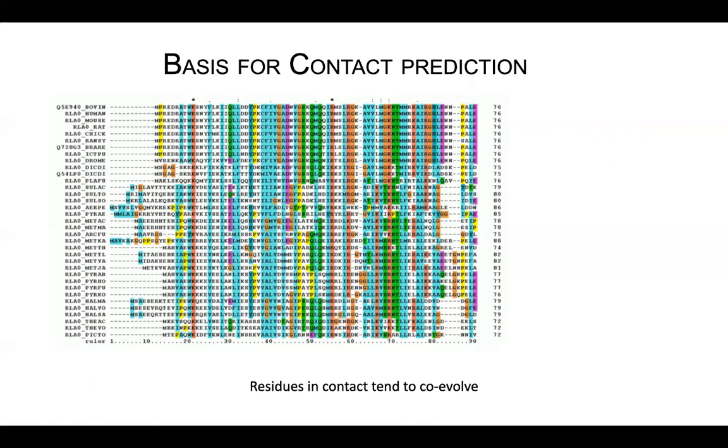These alignments contain a lot of information, and in particular, what we're using in this case is to compare two positions, one there and one here, looking for co-evolutions, looking for signals that once one of the positions change simultaneously, the other one changes.